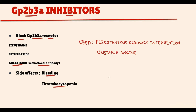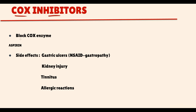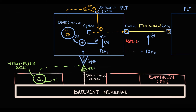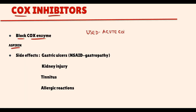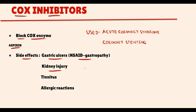Another class of drugs is COX inhibitors. These drugs block the COX enzyme, and by this they inhibit aggregation. By far the most popular drug is aspirin. When we prescribe aspirin, it blocks the COX enzyme, and by this it decreases the production of thromboxane A2. Without thromboxane A2, aggregation becomes much slower, the slower is the platelet-to-platelet aggregation, the slower the platelet plaque formation occurs, and thereby the slower a thrombus will be formed. Aspirin is used in acute coronary syndrome and for coronary stenting. The most important side effects of aspirin are gastric ulcer formation and renal injury.